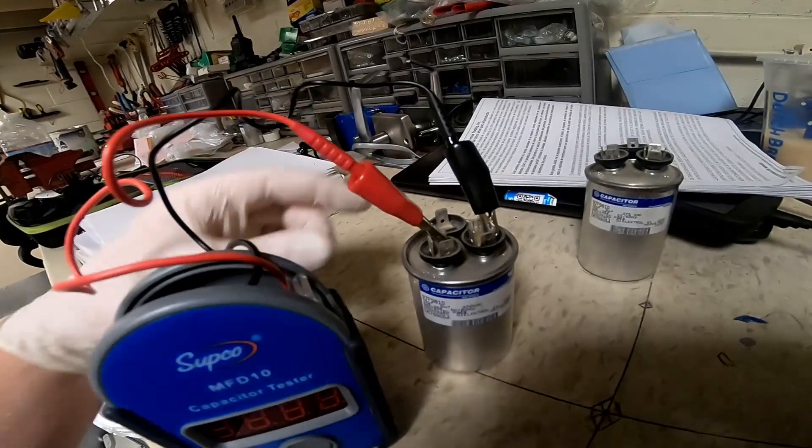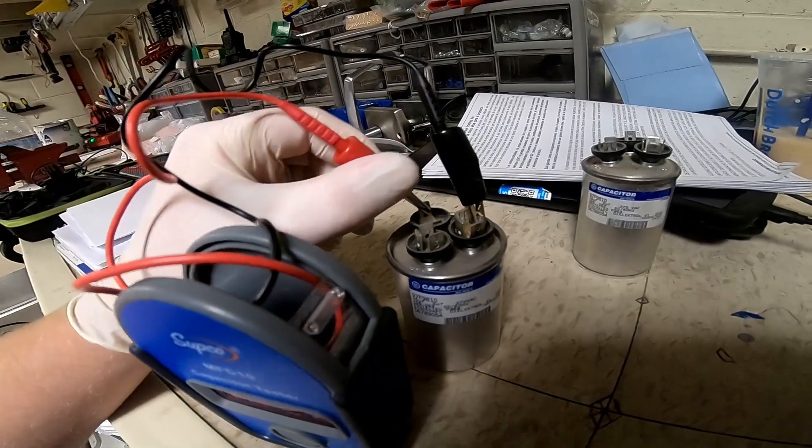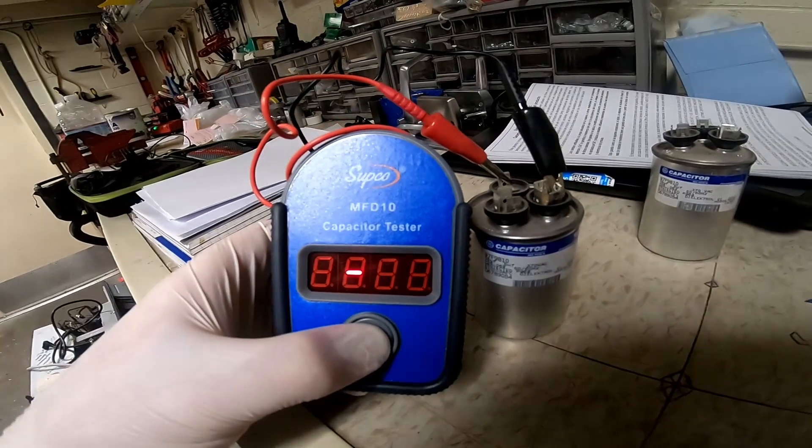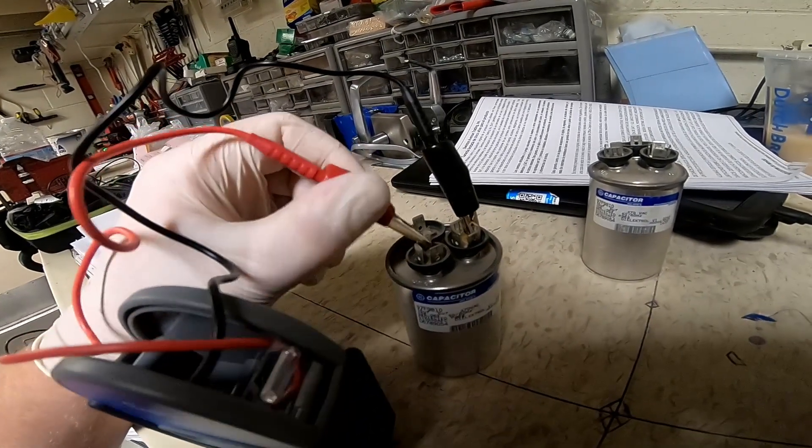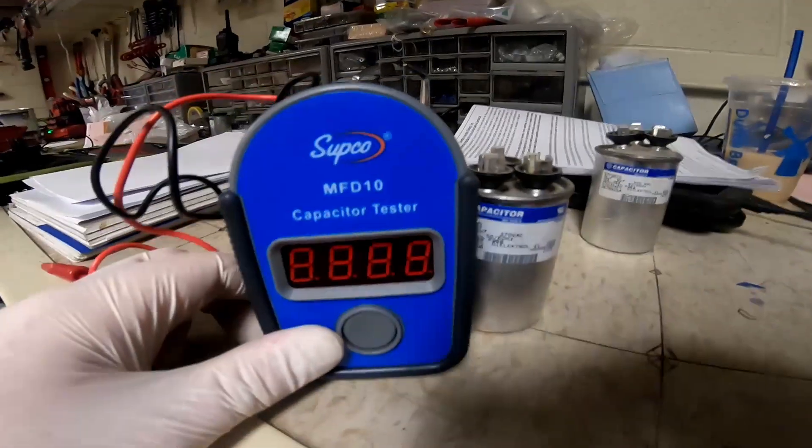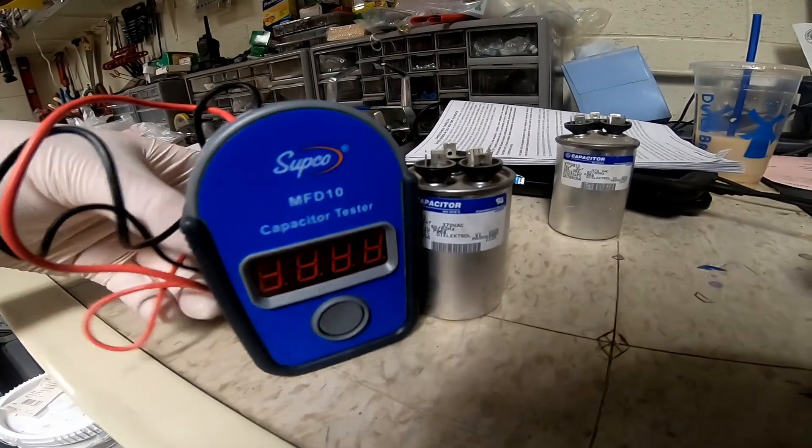And this one should be 5 plus or minus 6 percent, 4.9. That one's good, but the one that fires the compressor is no good.